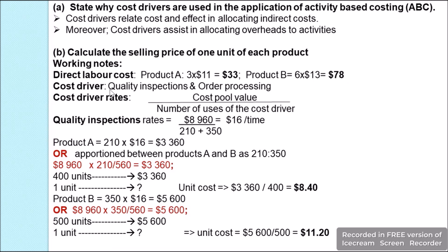For the overheads, which are our cost drivers — quality inspection, order processing, and depreciation — we use the ABC formula: cost driver rate = cost pool value ÷ number of uses of the cost driver. For quality inspection, the rate is $8,960 ÷ (210 + 350) = $8,960 ÷ 560 = $16 per quality inspection.